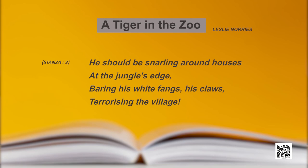The third stanza: 'He should be snarling around houses at the jungle's edge, bearing his white fangs, his claws, terrorizing the village.' Where is he? He is in the wild, near a little village at the jungle's edge. He is snarling and moving around the houses, trying to scare the villagers — terrorizing the village.